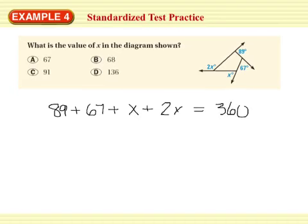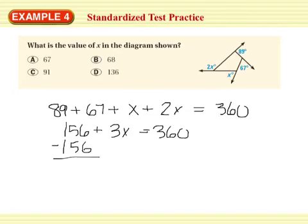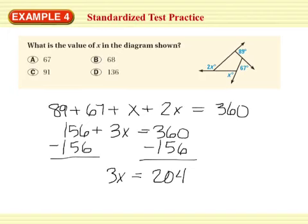So now you're going to collect like terms. 89 plus 67 is 156. X plus 2X is 3X. Subtract 156 from both sides. So, I'm subtracting 156 from both sides. 3X equals 360 minus 156 is 204. Divide both sides by 3. X equals 68.